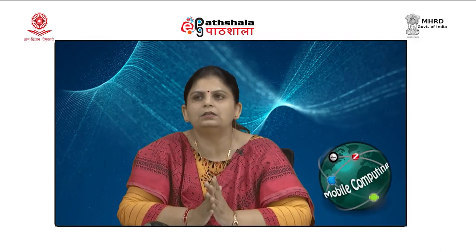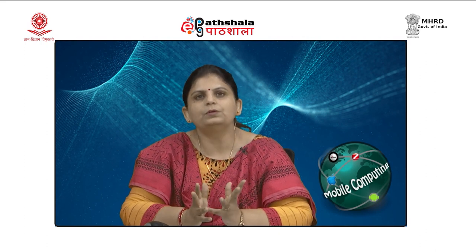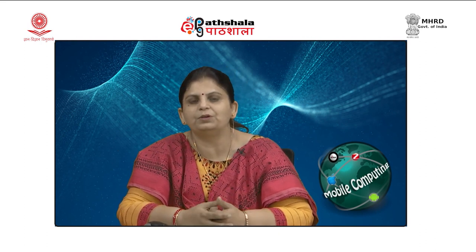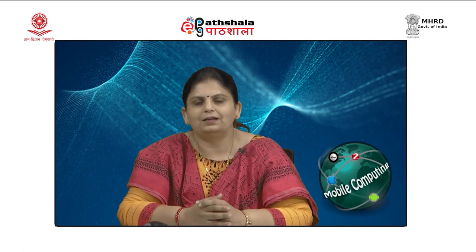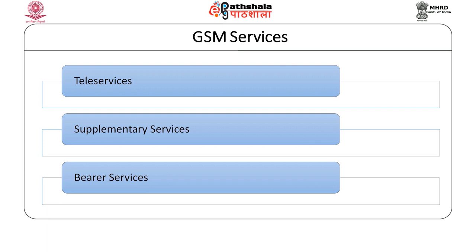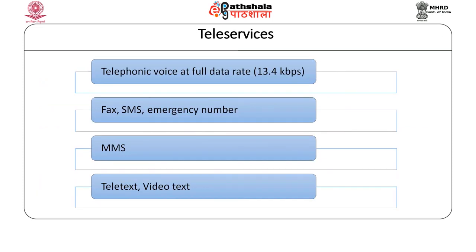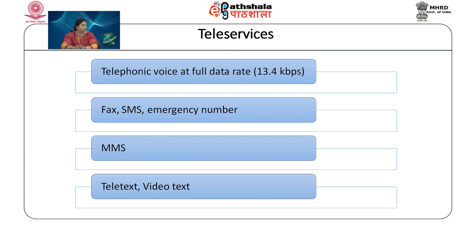Let us look at the services provided by GSM. The basic services can be divided into three categories: teleservices, supplementary services, and bearer services. Teleservices deal with telephonic services — providing voice at a maximum data rate of 13.4 kbps. You can send a fax, send an SMS, activate emergency numbers, send MMS, or send teletext and videotext.